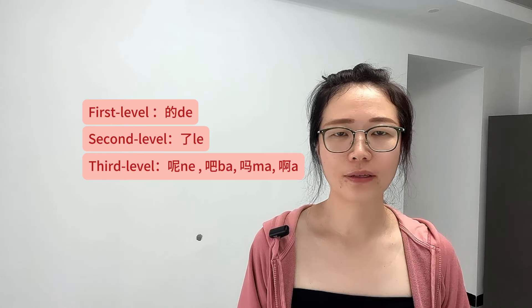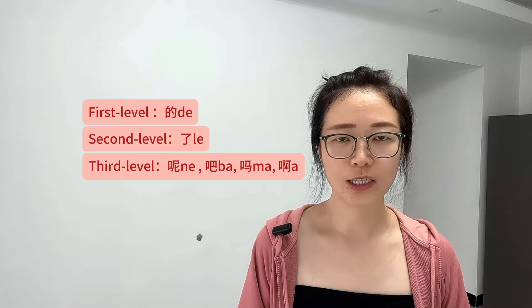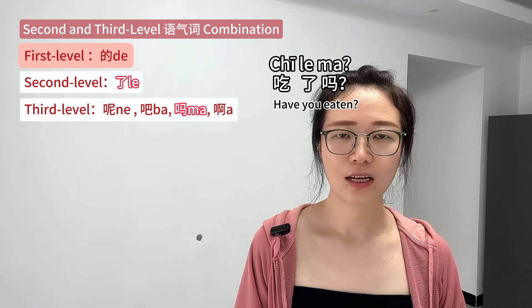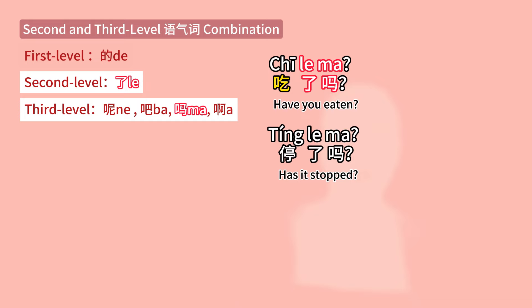语气词 has a specific order. First level 语气词 comes first in the sentence, followed by the second level and third level 语气词. First and second level combination examples: 吃了吗? 停了吗? 好了吗?